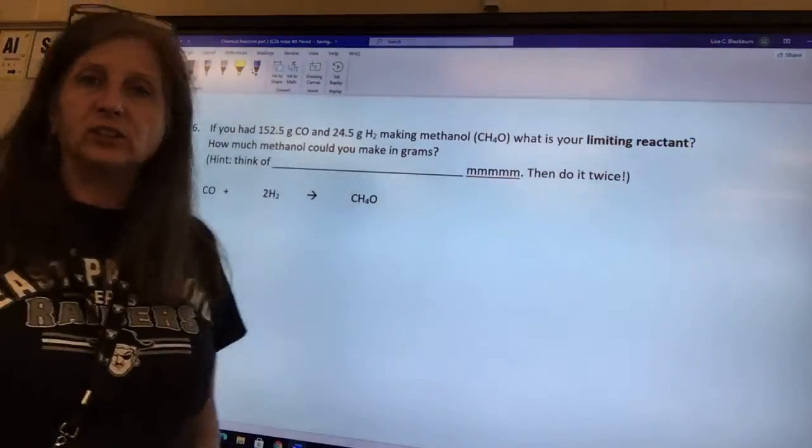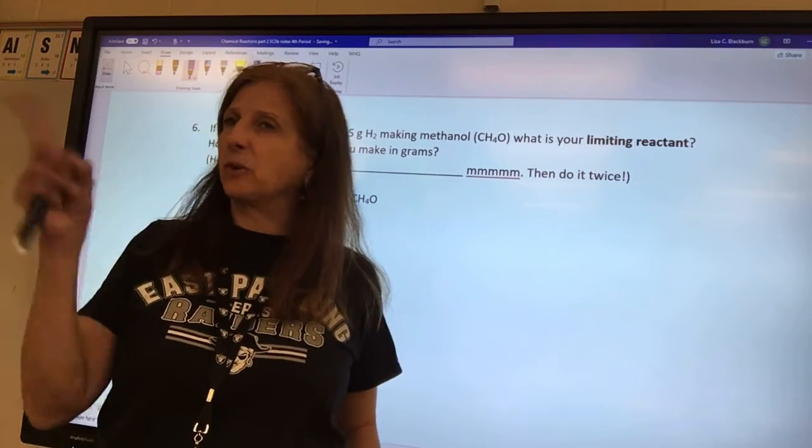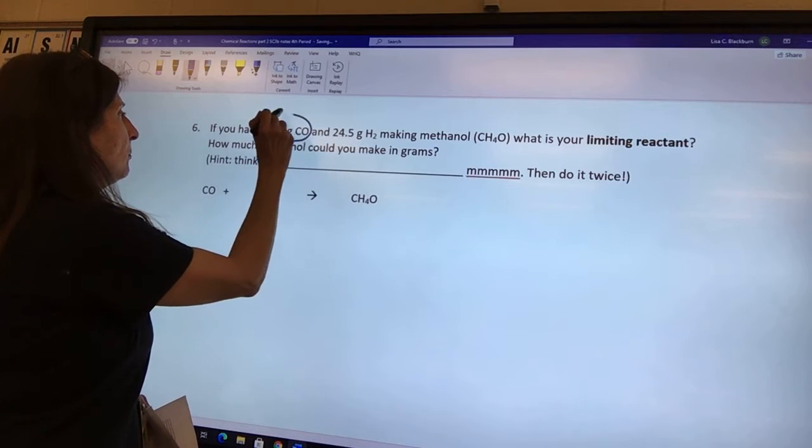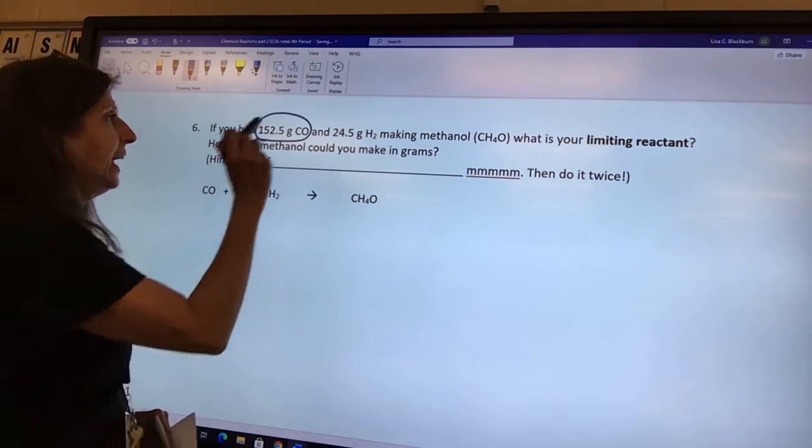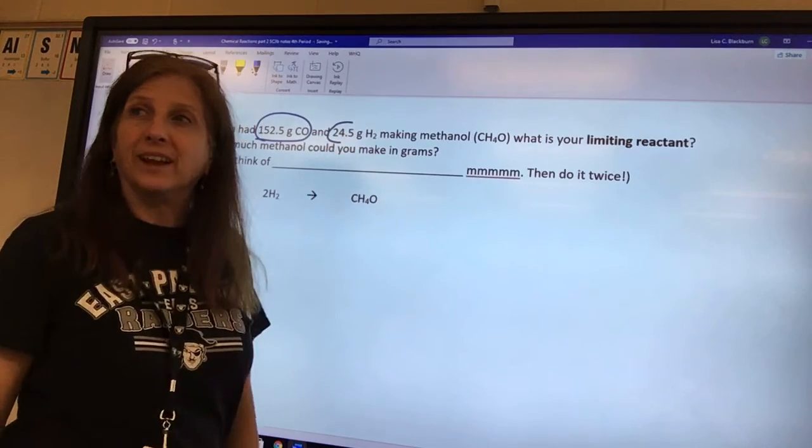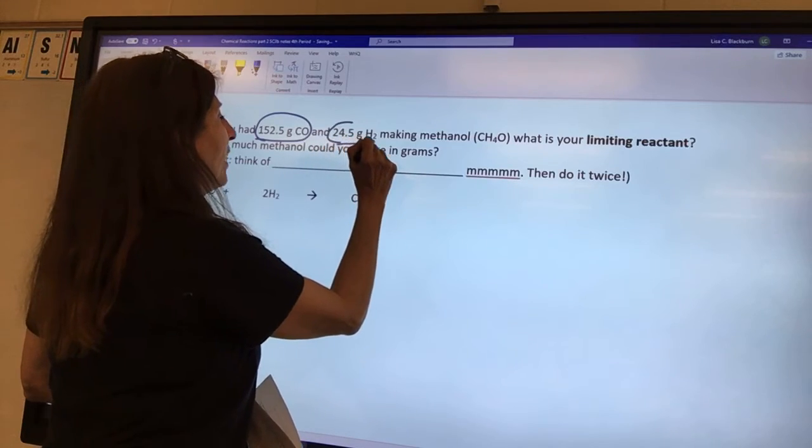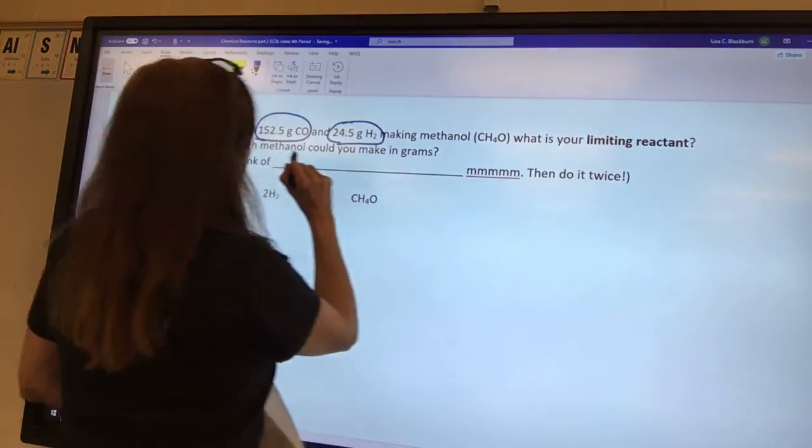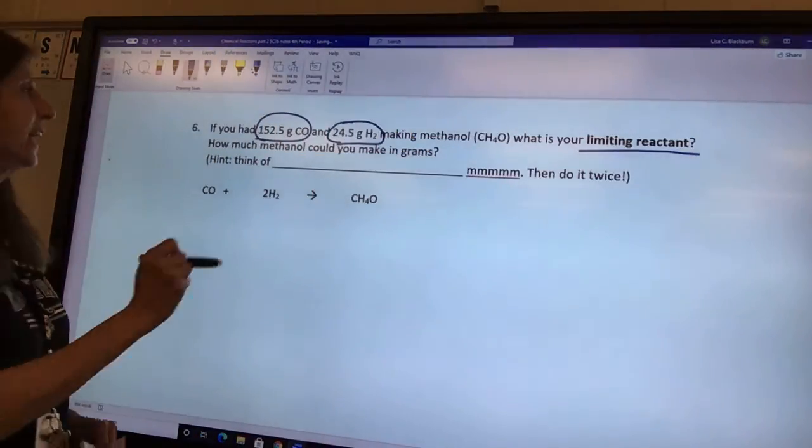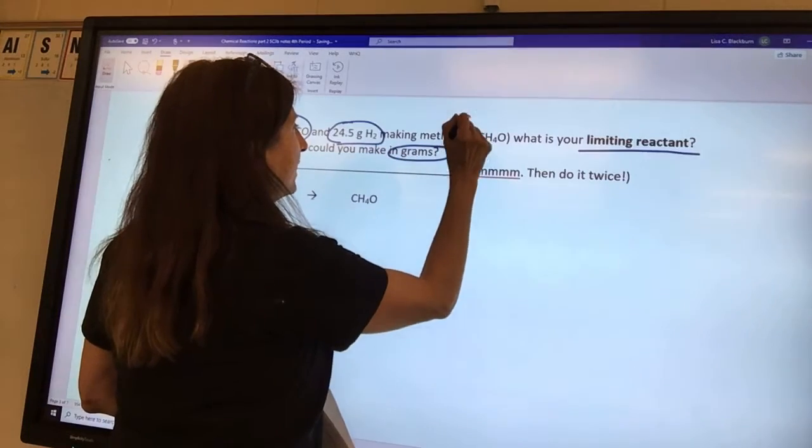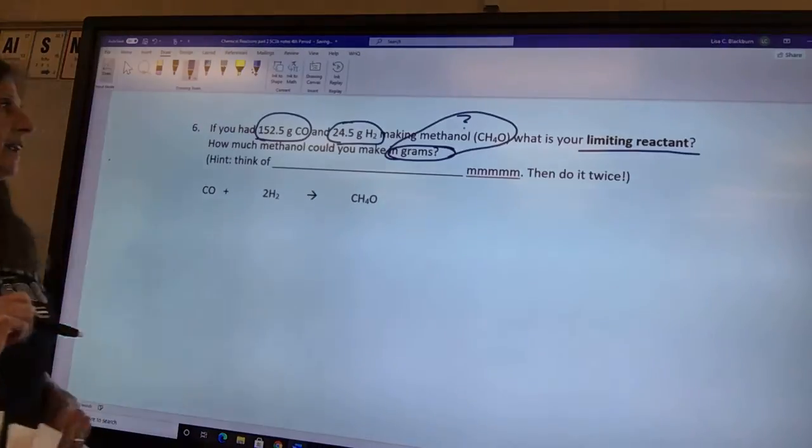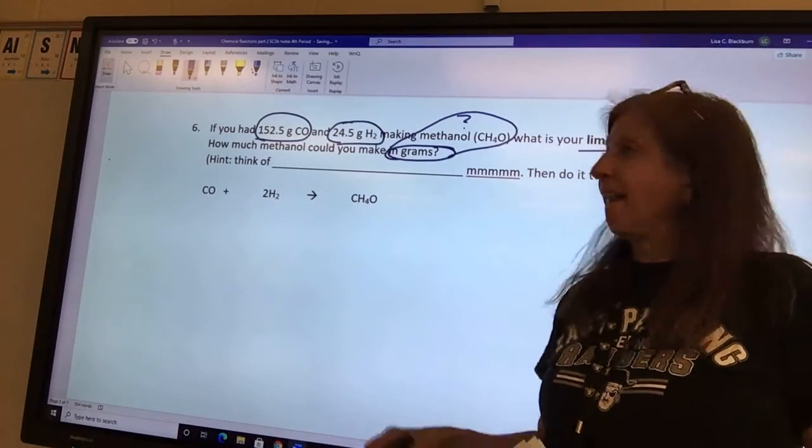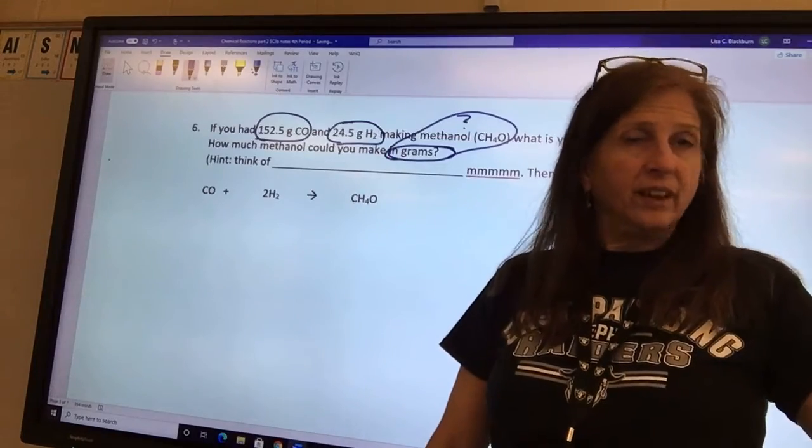What are we going to do first? We learned to do it in English class. We're going to annotate. If you had 150 grams of carbon monoxide, that's the number in the chemical, so we circle it. And for 200, oh, I remember it. I remember the embarrassing thing. 24.5 grams of hydrogen. What's wrong with this problem? Why is it ugly? I have two things that I know.